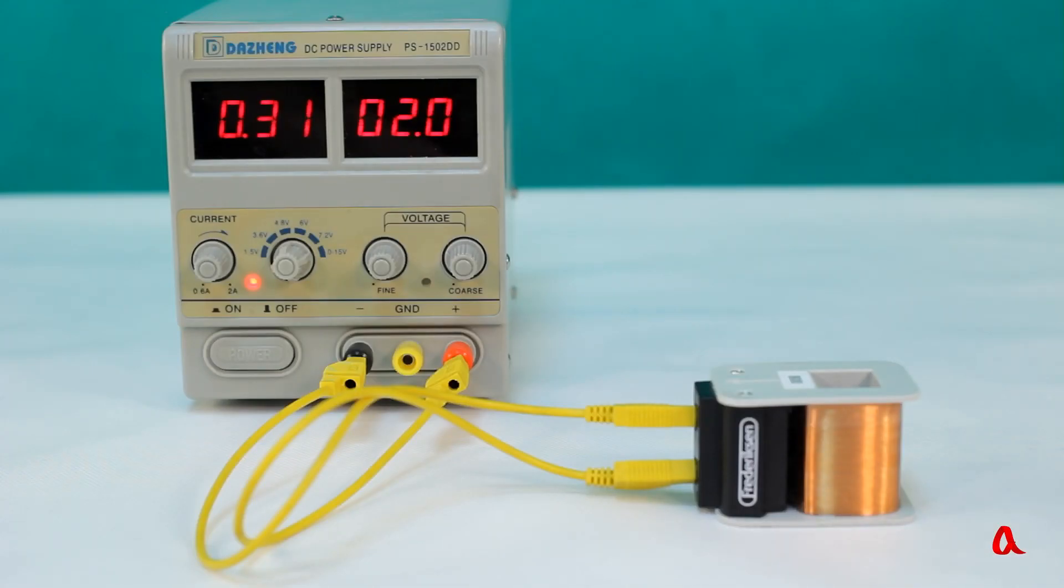Let's set the voltage at the source to 2 volts. The current of 0.3 ampere flows through our coil.